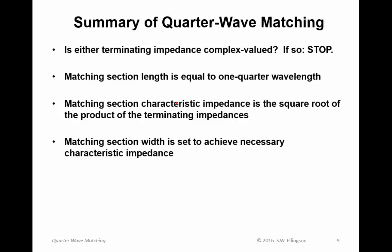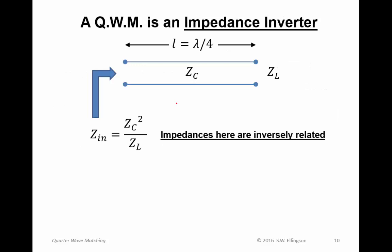The matching section width is set to achieve the necessary characteristic impedance. So, I've assumed microstrip line here. So, once I had a characteristic impedance, I then set out to find the width. Of course, you can do quarter wave matching with other kinds of transmission lines. Coaxial cable, you can use twin conductor cable. Anything that serves as a transmission line can be used to do a quarter wave match.